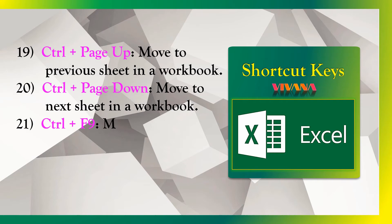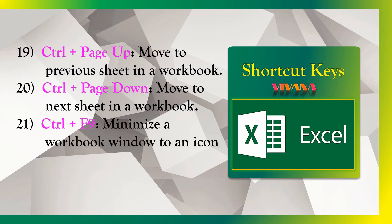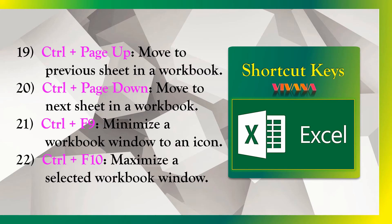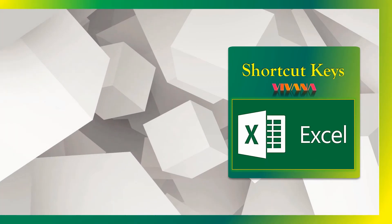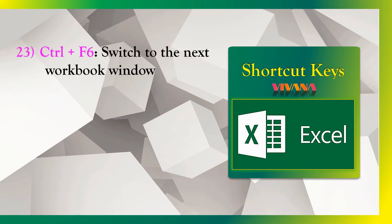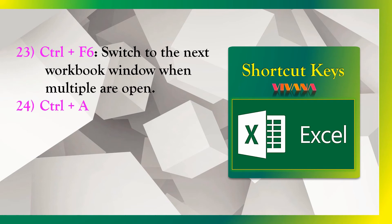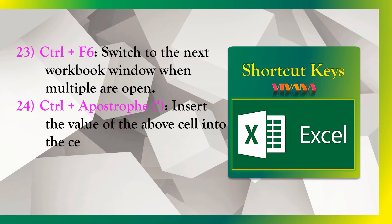21. Ctrl plus F9 — Minimize a workbook window to an icon. 22. Ctrl plus F10 — Maximize a selected workbook window. 23. Ctrl plus F6 — Switch to the next workbook window when multiple are open. 24. Ctrl plus Apostrophe — Insert the value of the above cell into the currently selected cell.